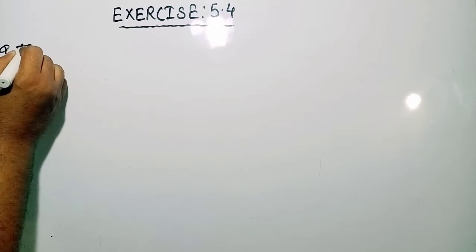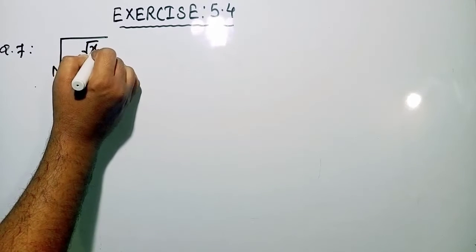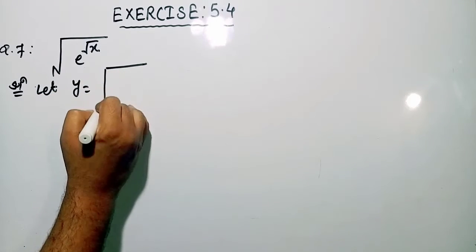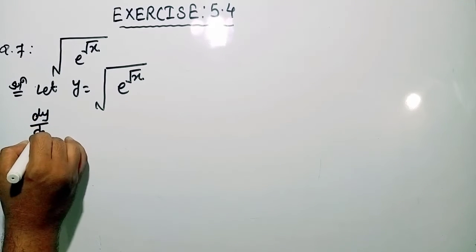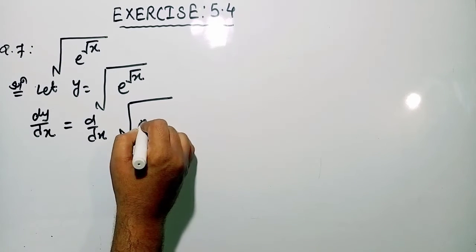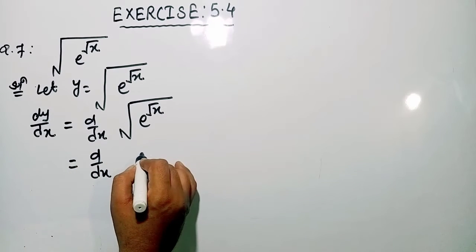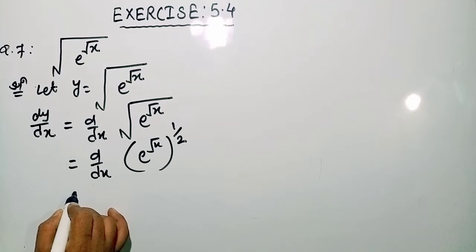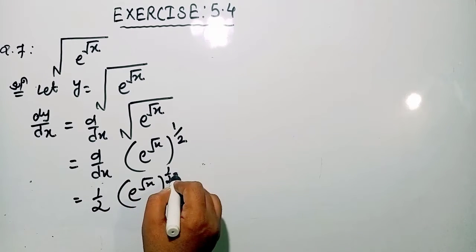Moving to the next question: differentiate square root of e raised to the power square root of x. So y is equal to square root of e raised to the power square root of x. Differentiating both sides with respect to x, we can rewrite this as e raised to the power root x, all to the power 1 by 2. So differentiating, we get 1 by 2 times e raised to the power root x, whole to the power 1 by 2 minus 1.